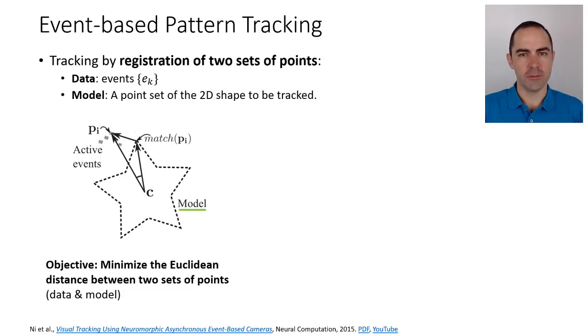We can now call them event-based pattern tracking. You know that the events are caused by moving edges in the scene, so these algorithms work by tracking through registration of two sets of points. One set is the data, the events, and the other one is called the model. Previously it was like a blob, and now we're going to have a point set that represents the object that we want to track.